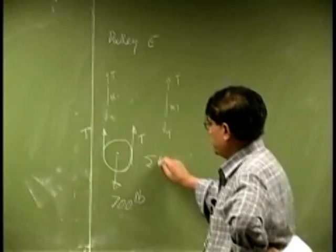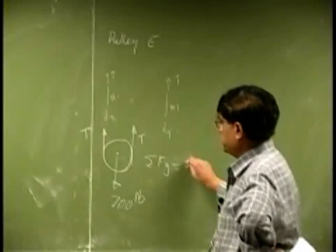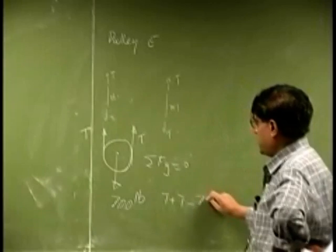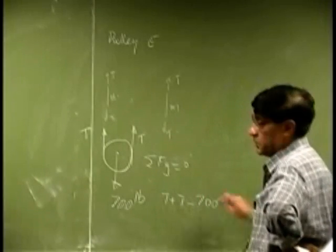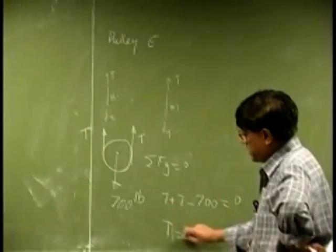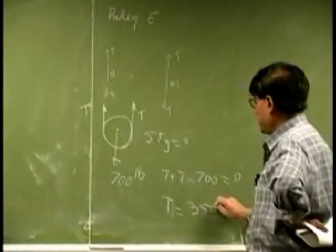It is easy, if we sum your force in the y direction, that should go to 0. So it gives you T plus T minus 700 goes to 0. And you get, basically you are going to get T as 350.